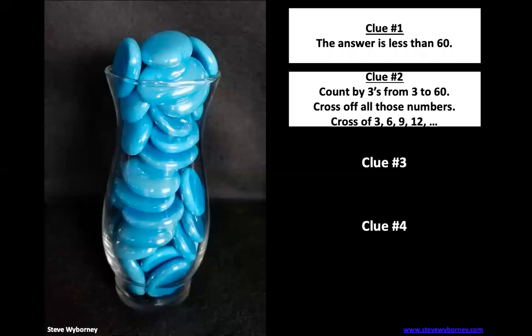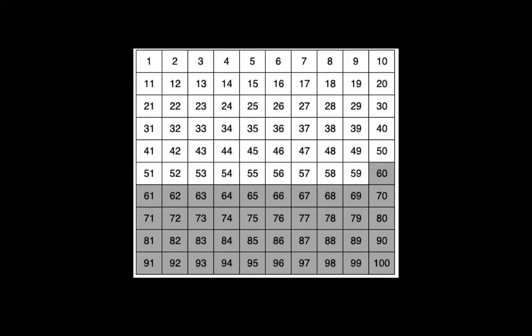All right, do you have your new estimate ready? Here we go, let's take a look at clue number two. Clue number two says count by threes from 3 to 60 and cross off all those numbers. Now for those of you that are in 3rd or 4th or 5th grade, what would we call this? Yeah, these are our threes facts or multiples of threes. Otherwise it's skip counting by threes.